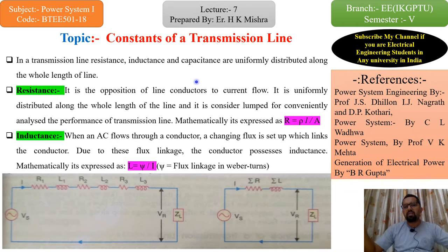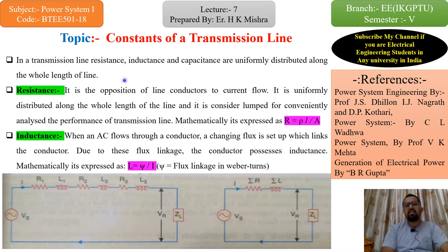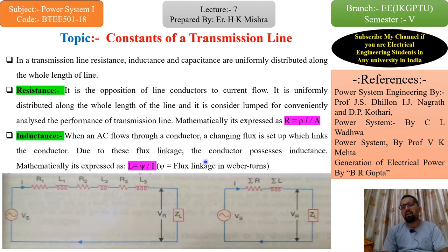Generally, we have two towers and a cable — in terms of conductor — between those two towers. The main three components in a transmission line are: first one is resistance, second one is inductance, and third one is capacitance. In a transmission line, resistance, inductance, and capacitance are uniformly distributed along the whole length of the line. It means it is not concentrated at particular points — it is uniformly distributed across the line.